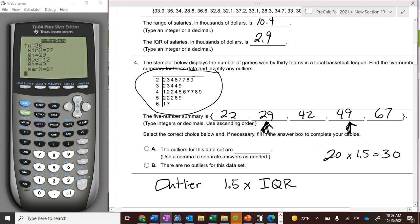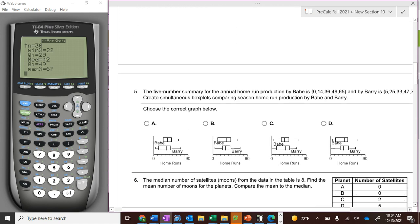Is there a number that's 30 below the first quartile or 30 above the third quartile? And the answer is no, so there are no outliers. Some sets will have outliers, some sets will not. The rule for outliers: 1.5 times the interquartile range, and then you go from the third quartile up, first quartile down.